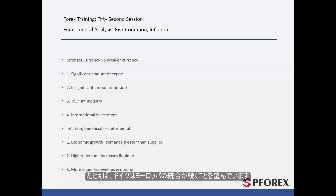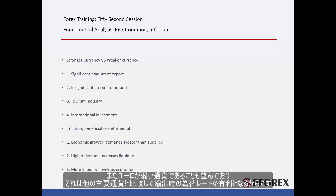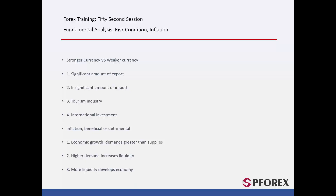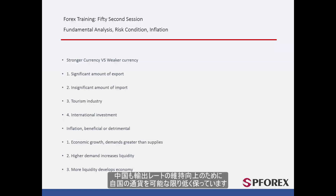For example, Germany prefers to maintain European unity as well as a weaker Euro currency, compared with other major currencies, to increase its exporting rate. If the Euro currency project fails, the Deutsche Mark would increase considerably, resulting in a lower rate of exporting goods and a lower rate of tourism travel. Similarly, China requires to keep its currency as low as possible to maintain or increase its exporting rate. If the Yuan becomes more powerful, there would be a budget shortage, considering its high population rate.